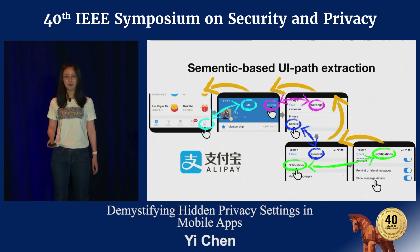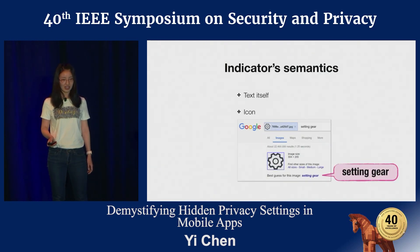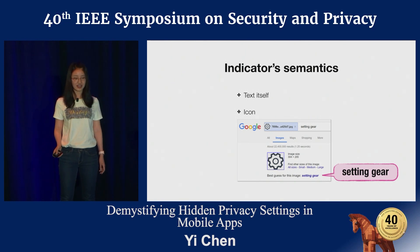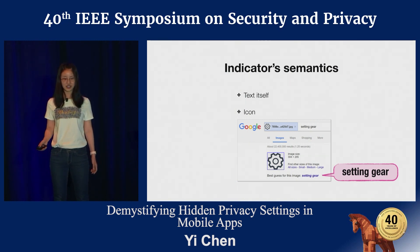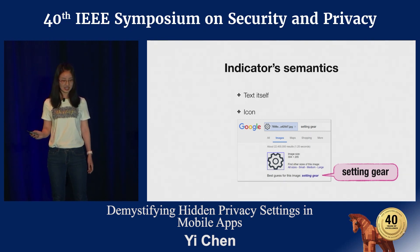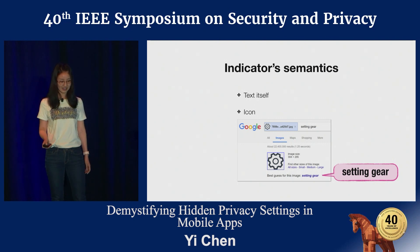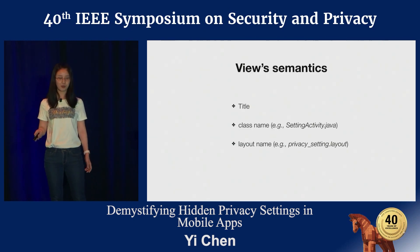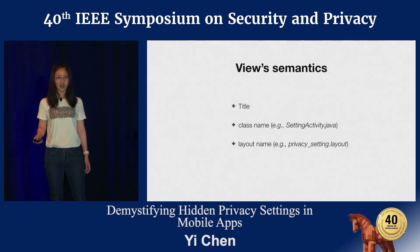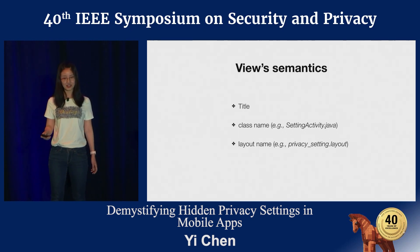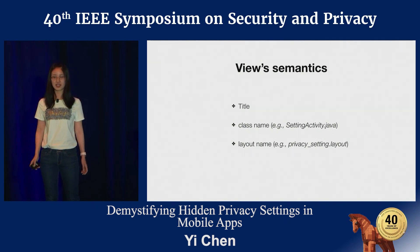We detail how to extract semantics from indicators and views. In-app, indicators have two types: text and icon. For text, the text itself provides semantics. For icons, we leverage the Google search engine — uploading images such as a gear icon, and Google's best guess says it might be a setting or gear, so we can identify the icon's semantics. For views, the title of a view can serve as its semantics. If a view doesn't have a title, the class name and layout file name such as privacy_setting.layout can also be used. In this way, we extract semantics of indicators and views, build connections between them, and extract the UI path for a given privacy setting.